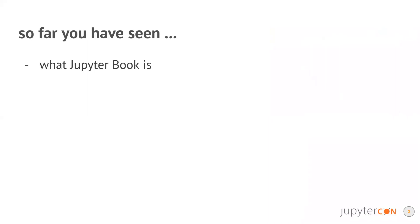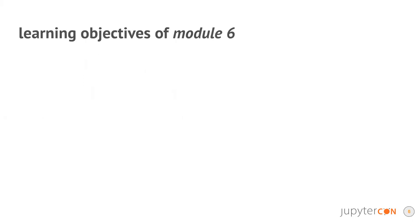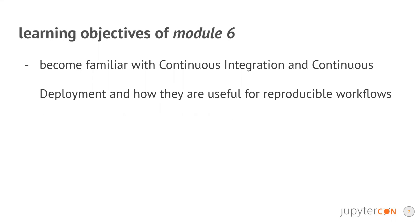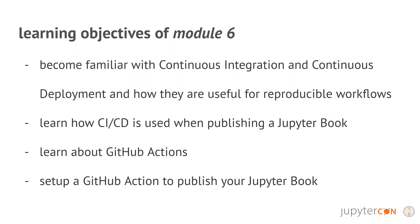So far you have seen what a Jupyter Book is, how to add contents to your Jupyter Book, and how to build and publish your Jupyter Book. The learning objectives of Module 6 are to become familiar with continuous integration and continuous deployment and how they're useful for reproducible workflows, learn how CI and CD is used when publishing a Jupyter Book, learn about GitHub Actions, and set up a GitHub Action to publish your Jupyter Book.